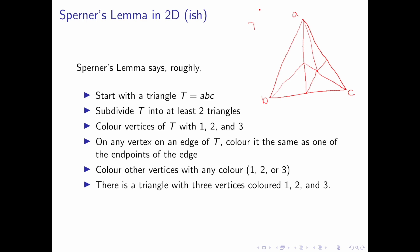Next we color the vertices. The vertices of T, A, B and C, they will be colored 1, 2 and 3. So A will be 1, B will be colored 2 and C will be colored 3. On any vertex that is on the edge of T, for example this one, it will be colored one of the colors of either B or C. So for example, this could be colored 2.